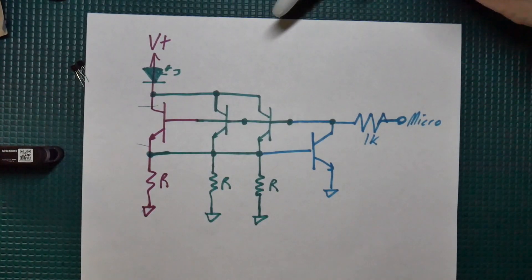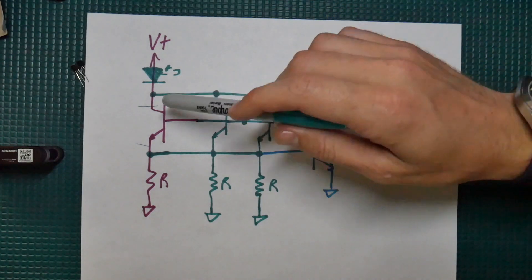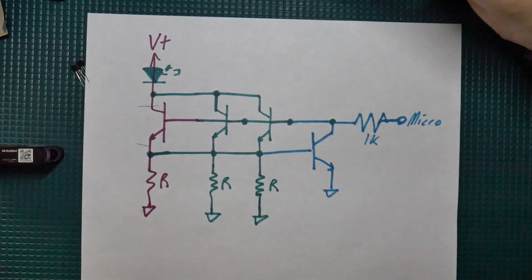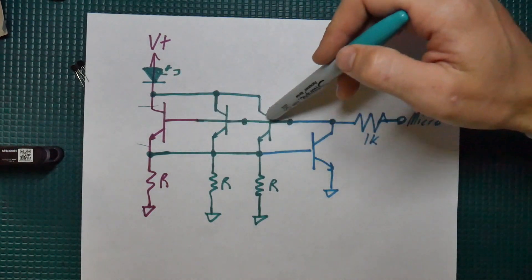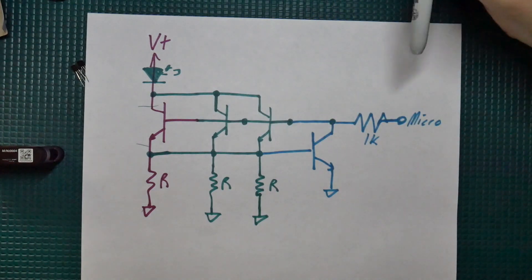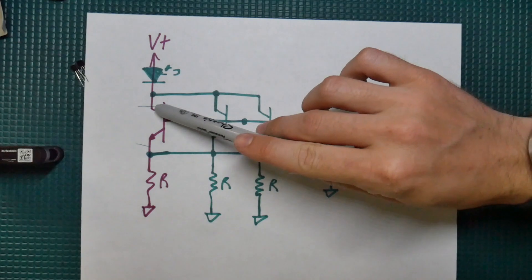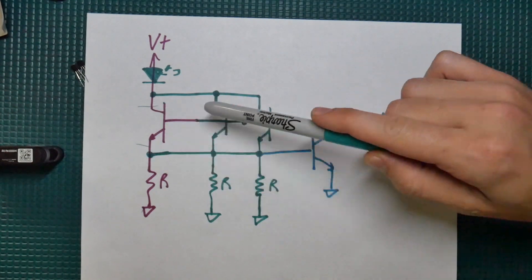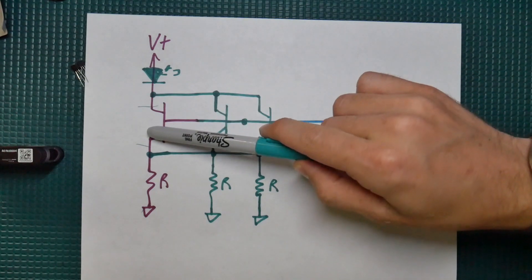So what was that all about? Well we've got these three transistors in parallel here. And even if you had all three of these mounted to a heat sink the temperature was equal on all of them. Still one of them would have this situation where it runs away.